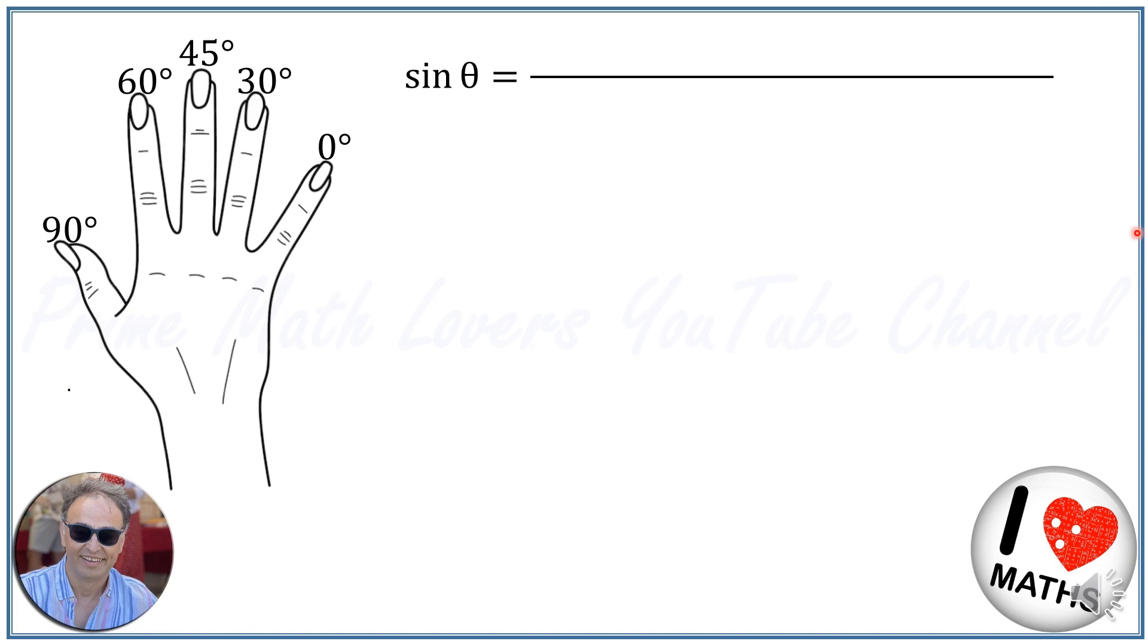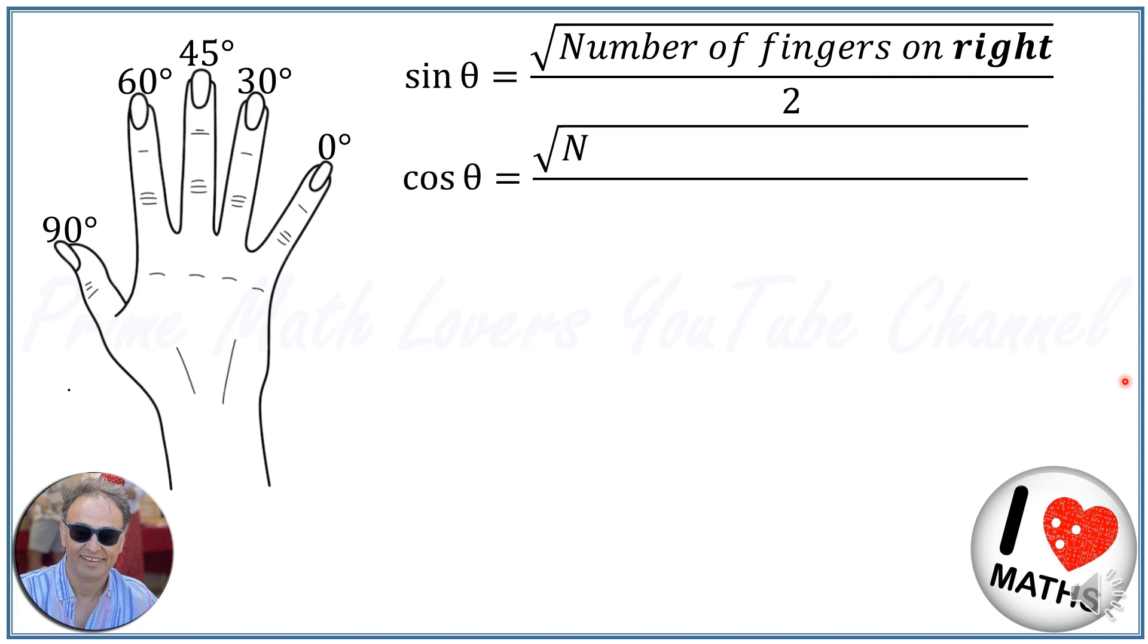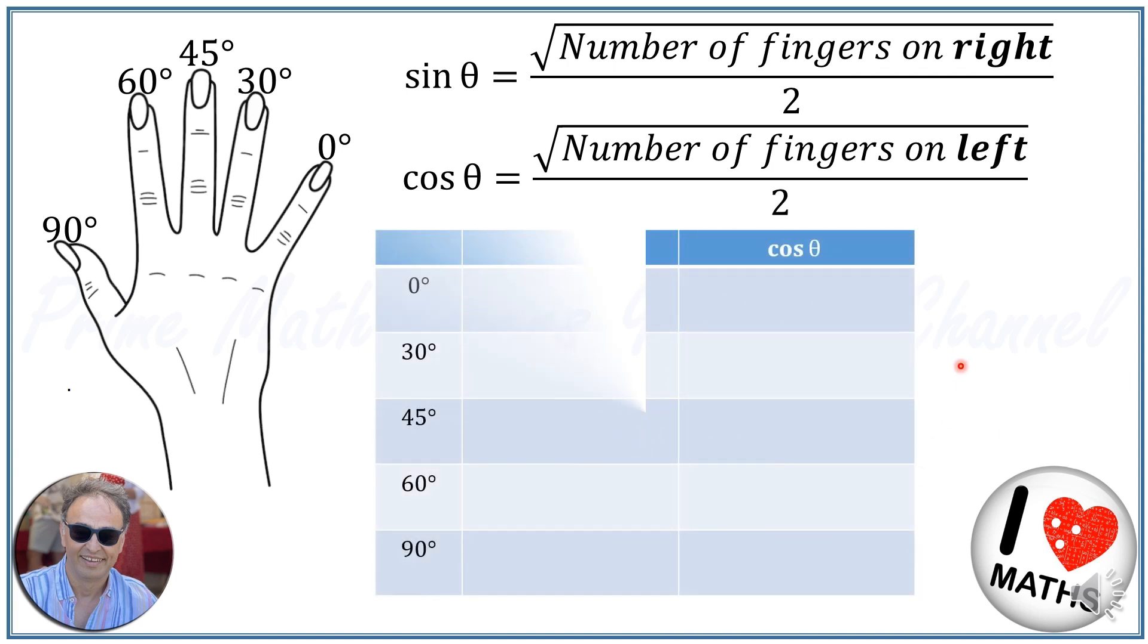Now here's the trick: the sine of each angle is the square root of number of the fingers on the right hand side divided by 2. I'll explain it more. And the cosine is the square root of number of fingers on the left hand side divided by 2.